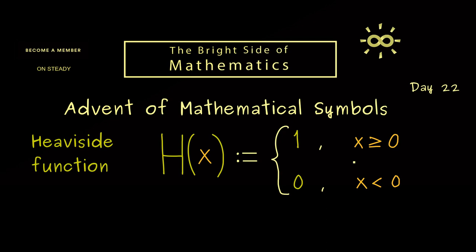The important thing is just that we have this step here. Hence, the graph of the function looks very simple—we just have these two constant parts.